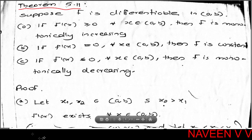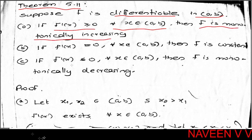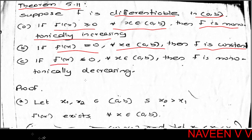Theorem 5.11: Suppose f is differentiable on open interval (a, b). First, if f'(x) ≥ 0 for all x in (a, b), then f is monotonically increasing. Second, if f'(x) = 0 for all x in (a, b), then f is constant. Third, if f'(x) ≤ 0 for all x in (a, b), then f is monotonically decreasing.